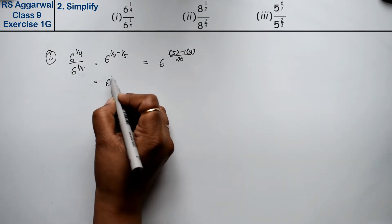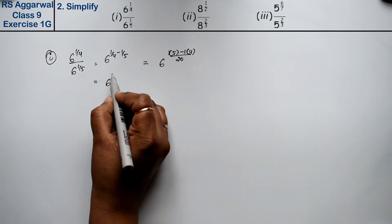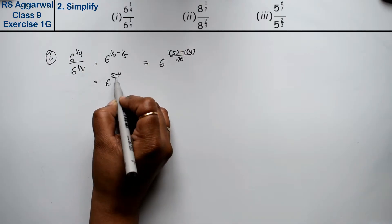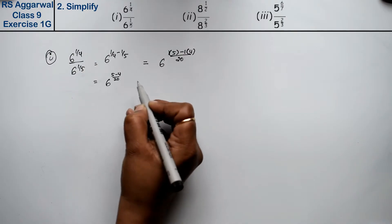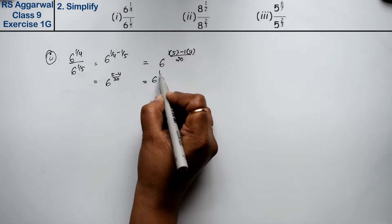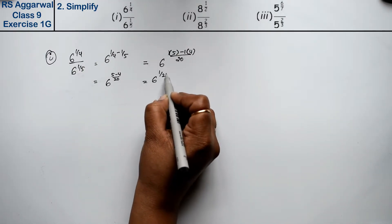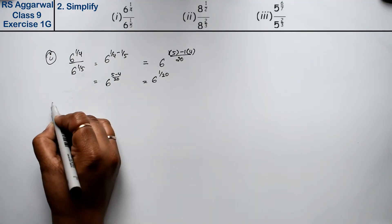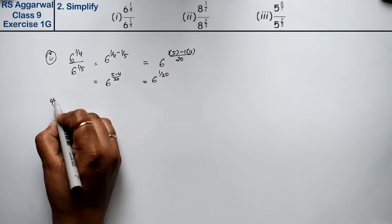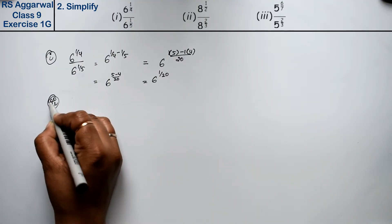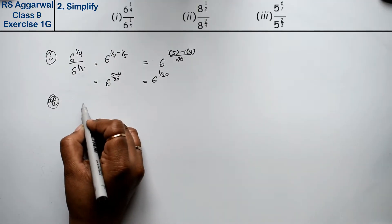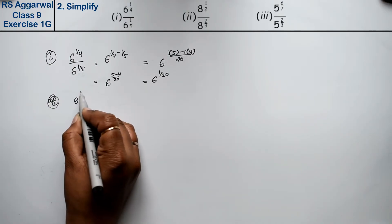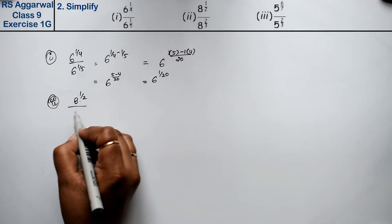Toh isko kya likh sakte hain: six ki power five minus four upon twenty. And we can say that six ki power one upon twenty is the answer. Let's do the second part.